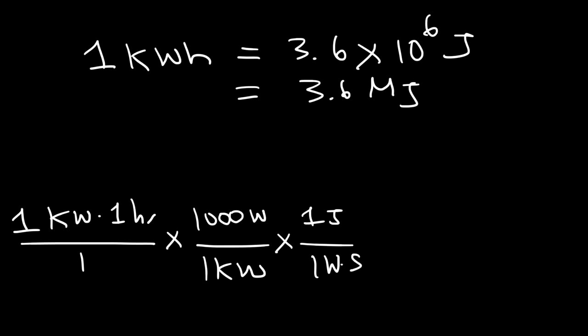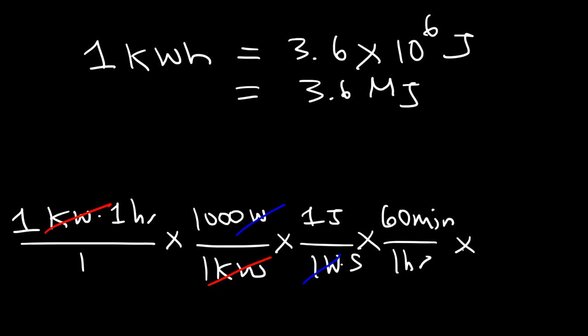And one watt is one joule per second — I'm going to write it with seconds on the bottom. You want to set this up so that the unit kilowatts will cancel and the unit watts will cancel as well. Now one hour is equivalent to 60 minutes, and each minute contains 60 seconds. Notice that the unit hours cancel, the unit minutes cancel, and seconds cancels as well.